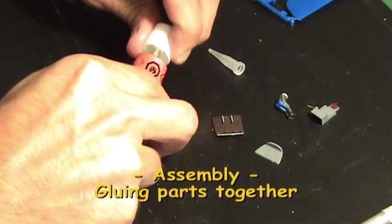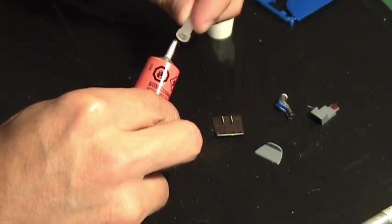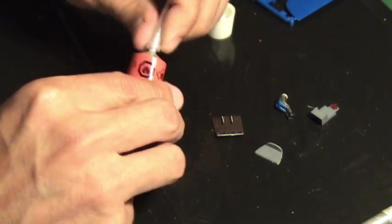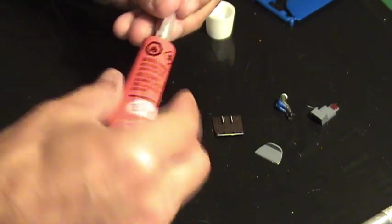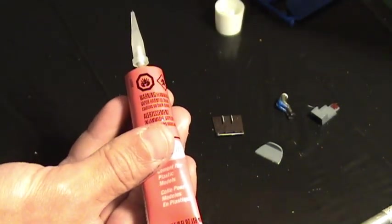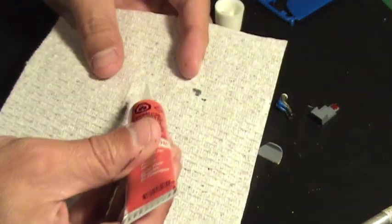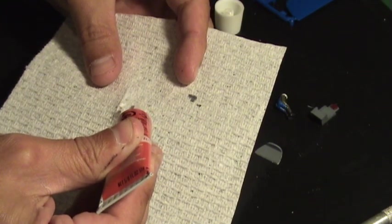When using glue packaged in a squeeze tube, use a plastic glue tip to help apply the glue in small quantities. Start by squeezing a small amount of glue on a paper towel to fill up the plastic glue tip.